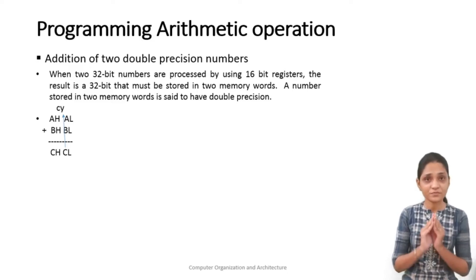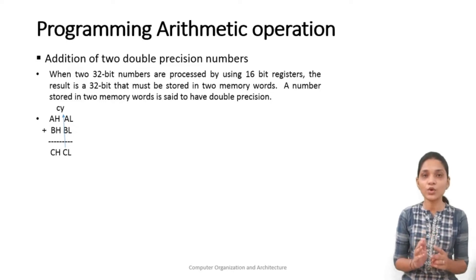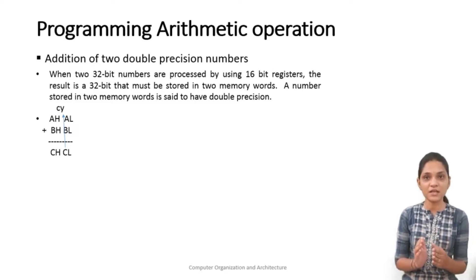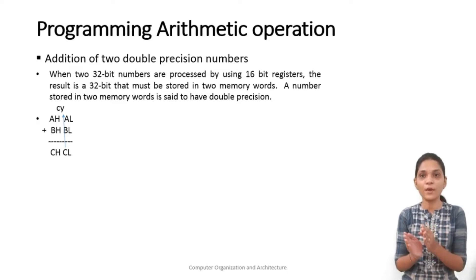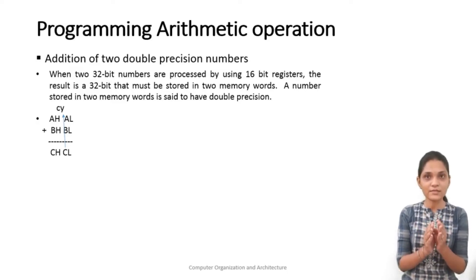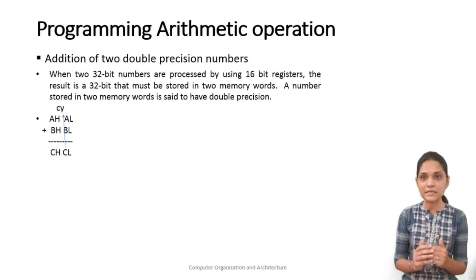Here our registers are 16-bit but we are processing data of 32-bit, so this is said as a double precision number. We have two numbers stored at four memory locations because our number is 32-bit and the storing capacity of a memory location is 16-bit. So we will require two locations for each number. We have four locations: AH, AL and BH, BL for storing the content of A and B. We are storing the result at location CH and CL.